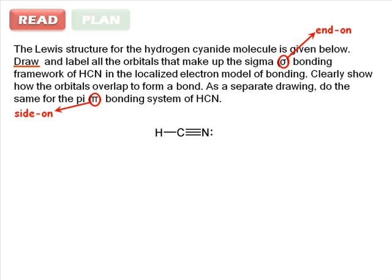In planning your approach, examine the provided Lewis structure. Both the nitrogen atom and the carbon atom have two electron domains. This means that they're sp-hybridized.